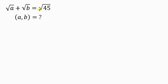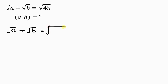Our first step will be to decompose 45 into two factors such that one of the factors is a perfect square. So we have the square root of a plus the square root of b equal to the square root of 45, which becomes 5 times 9 — and 9 is actually a perfect square.